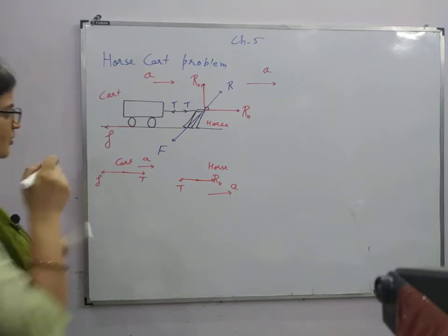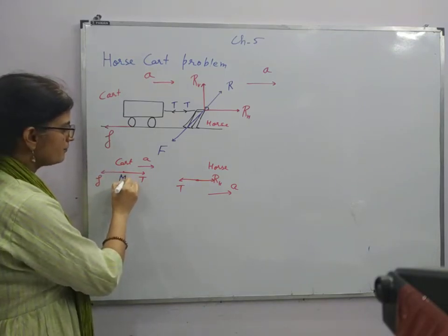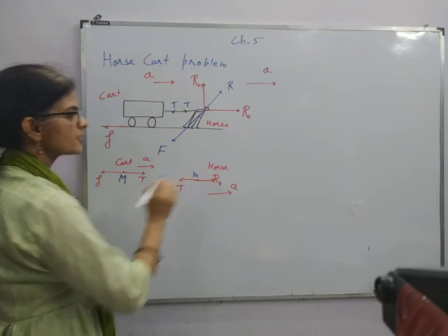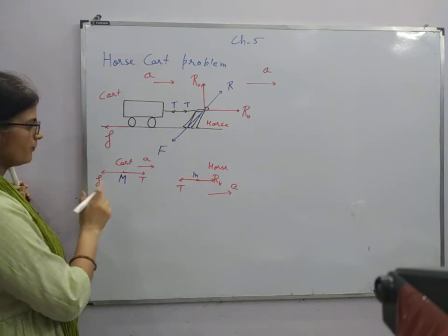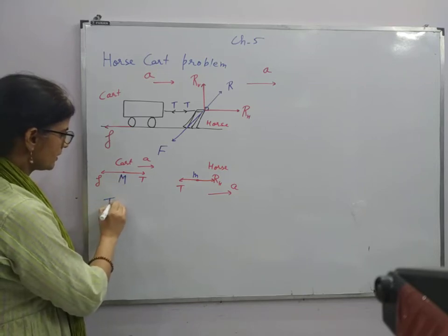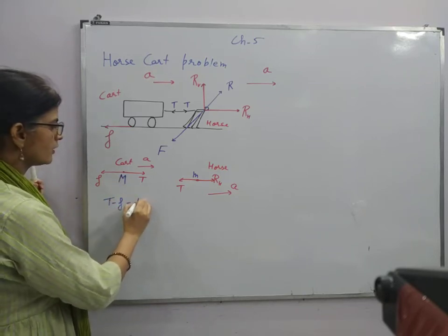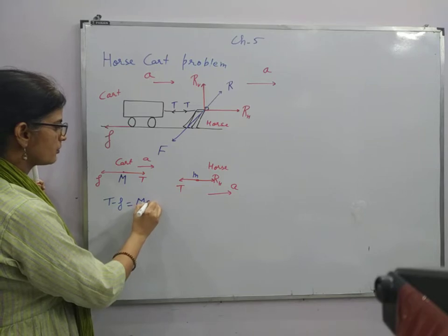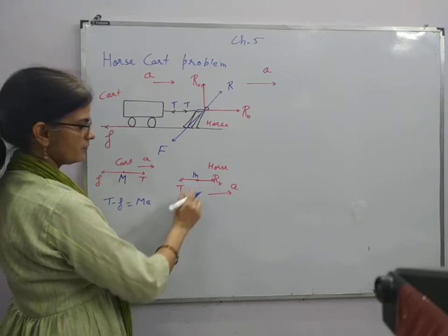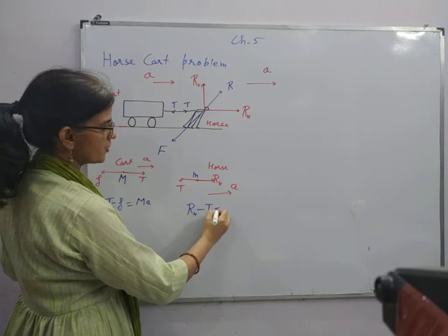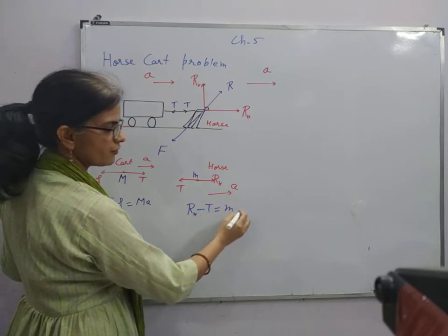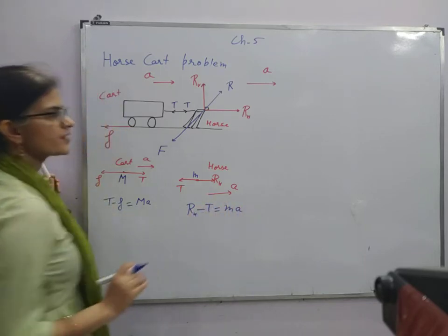If the mass of the cart is capital M, mass of the horse is small m, so we can make the two equations using second law. T minus F is equal to M into A. Here I can make horizontal component minus tension is equal to mass of the horse into acceleration.